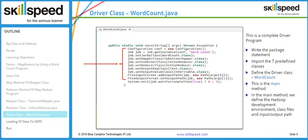The last line of the job code is job.waitForCompletion(), which submits the job and waits for it to finish. The return value is boolean — indicating success with zero or failure with one, as shown in our code example.